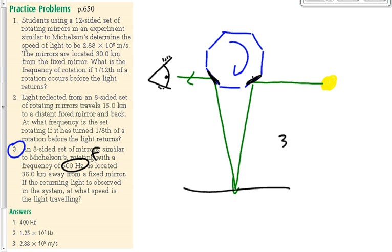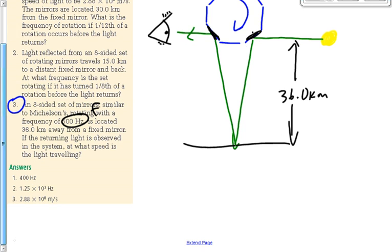We're also given a distance here, 36 kilometers from the rotating mirror to the plane mirror, and we want to find the speed. So, what's the formula? What's the recipe that we use to get this?